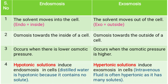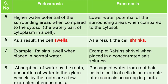Fourth point: hypotonic solutions induce endosmosis in a cell. All hypotonic solutions induce endosmosis, like distilled water — distilled water has no solute, so endosmosis occurs in it. Hypertonic — very concentrated — solutions always induce exosmosis, like intravenous fluids, which are often hypertonic as they have many solutes, so exosmosis occurs in such solutions.